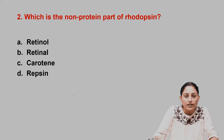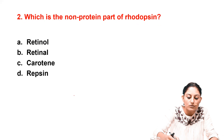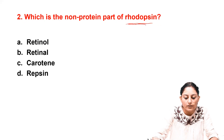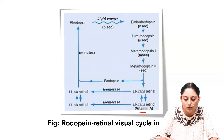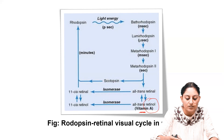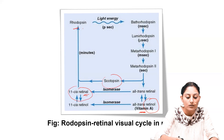Moving on to the next question: what is the non-protein part of rhodopsin? The options are retinol, retinal, carotene, and ribosine. Let's look into the rhodopsin-retinal visual cycle. Vitamin A, the all-trans retinol, gets converted into 11-cis retinol, which combines with scotopsin to form rhodopsin.